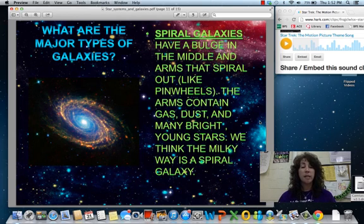And in those arms, there's gas and dust and other younger stars. We believe that the Milky Way is a spiral galaxy. And then of course, earth and our solar system is just going to be in one of those arms coming out from the center.